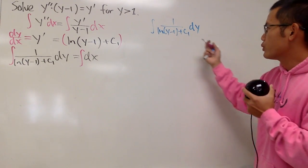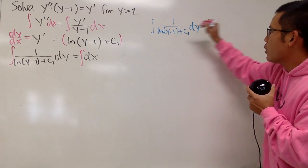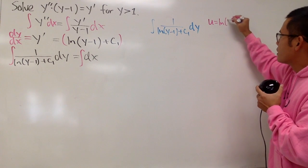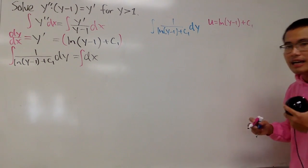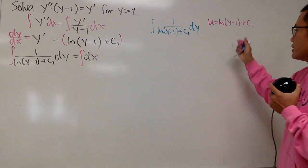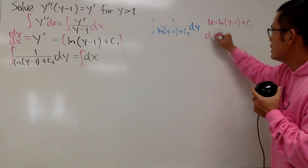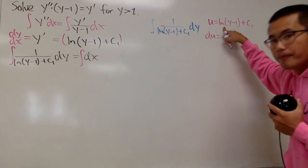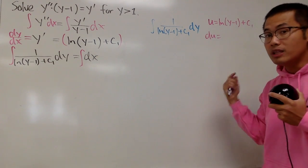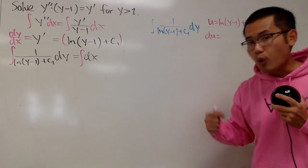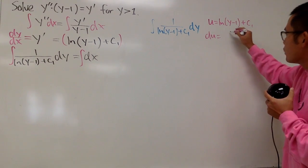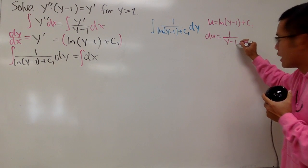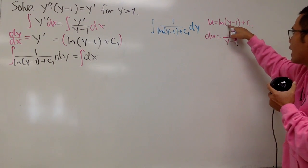I will let u equal to the whole denominator, so u equals natural log parentheses y-1, and we have the plus c1 after that. And as usual, let's just differentiate both sides, so we get du equals, because now, when we differentiate both sides, we are differentiating this with respect to y. So, when we differentiate this with respect to y, we just get 1 over y-1